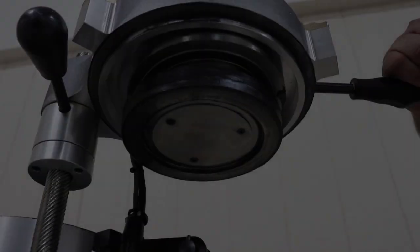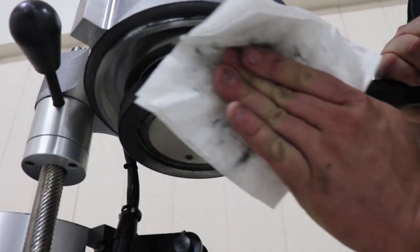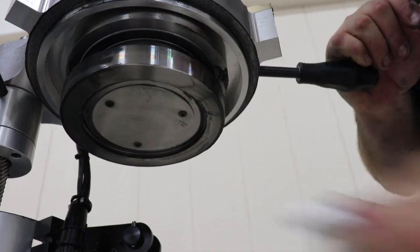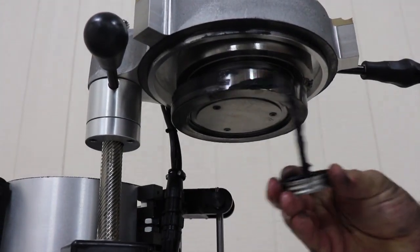Thoroughly clean the bearing cap's outer and bottom surfaces on the gyratory head. Then apply anti-seize to these surfaces.